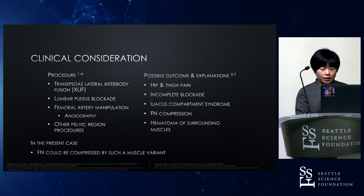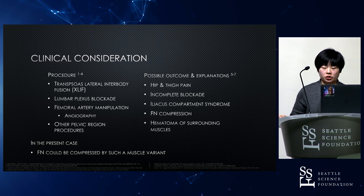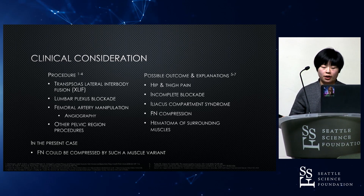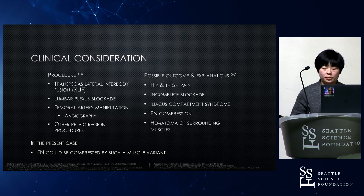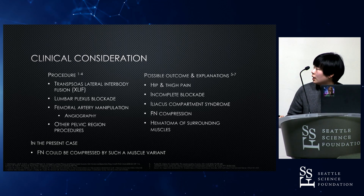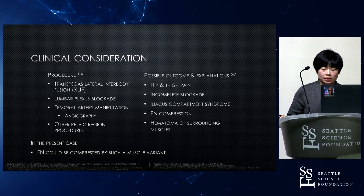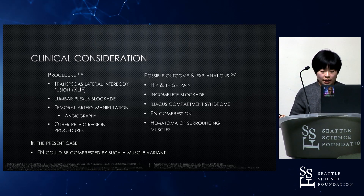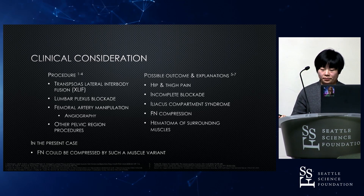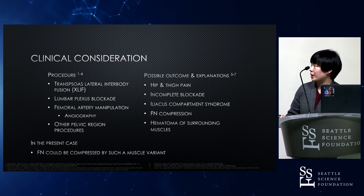For clinical consideration, variation of the femoral nerve and psoas muscle may affect surgical approaches to the region, such as lateral transpsoas interbody fusion, X-LLIF, lumbar plexus blockade, femoral artery manipulation for angiography, or other pelvic region procedures. Minimal knowledge of such anatomical variation can result in femoral nerve compression or damage, as well as iliacus compartmental syndrome due to hematoma of surrounding muscles. In our present case, the split femoral nerve can be compressed by such a muscle variant, and knowledge of this variation might also explain pain in the hip and thigh area due to an incomplete blockade of the femoral nerve.